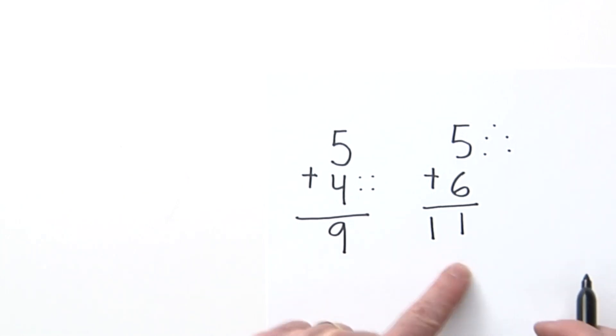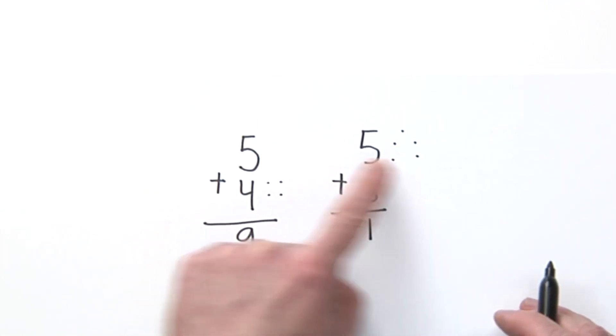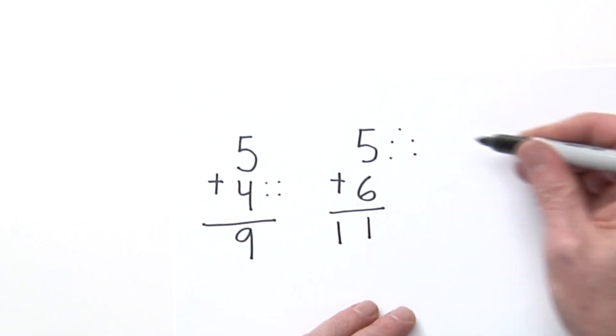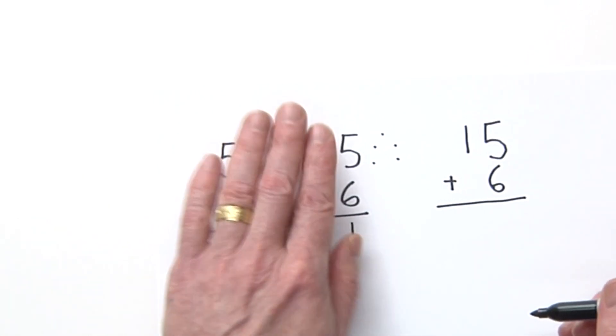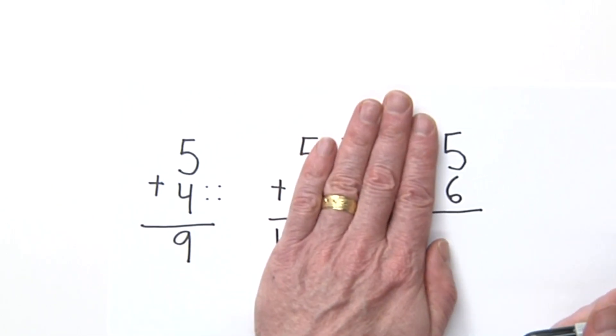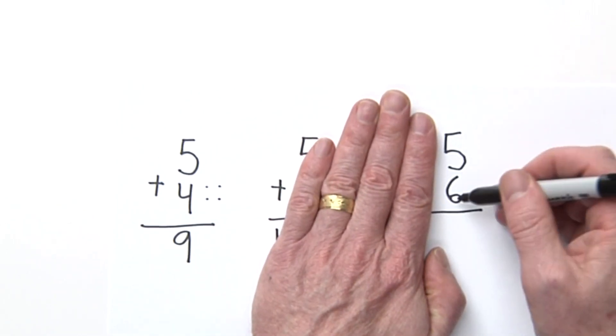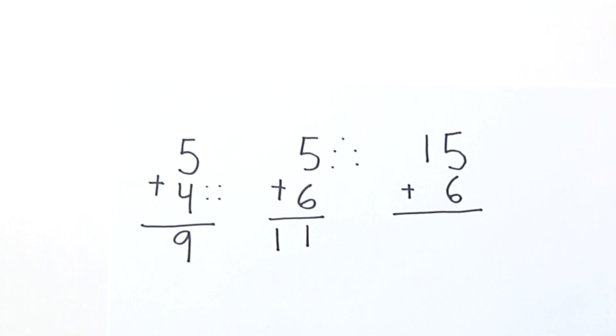Okay, so let's move this problem over here and I'm going to add on another number. I'm going to add 15 plus 6. We already did 5 plus 6, and we're going to do 5 plus 6 again. Remember, you always add the ones first, then you add the tens, and you regroup if you need to.